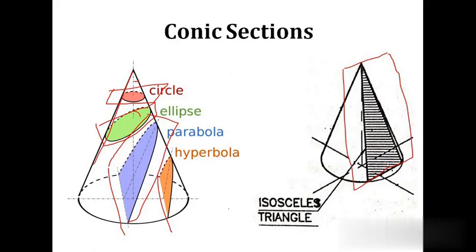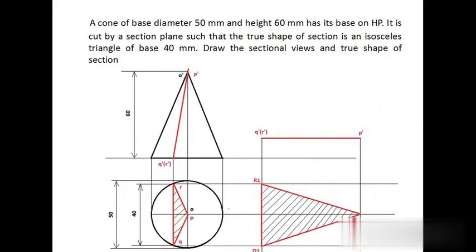Now we will discuss a few problems based on the conic section. The first question: a cone of base diameter 50 mm and height 60 mm has its base on HP. It is cut by a section plane such that the true shape of the section is an isosceles triangle of base 40 mm. You are asked to draw the sectional views and true shape of the section. This is an indirect question — you are not given the position or inclination of the section plane; instead, you are given the dimensions of the true shape.